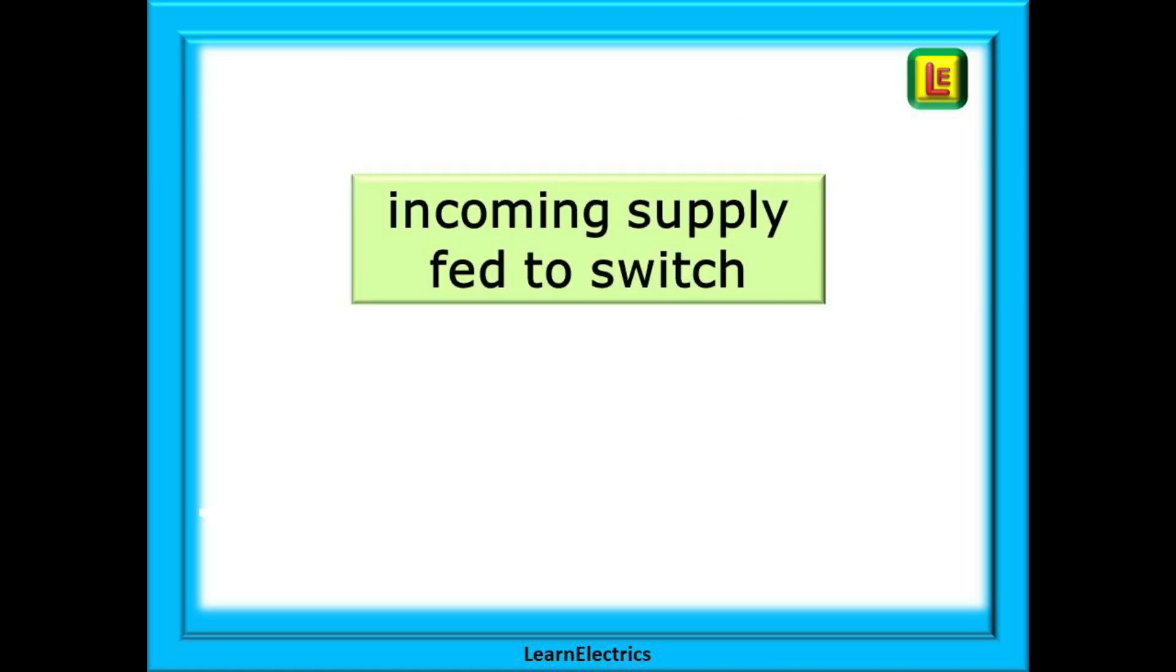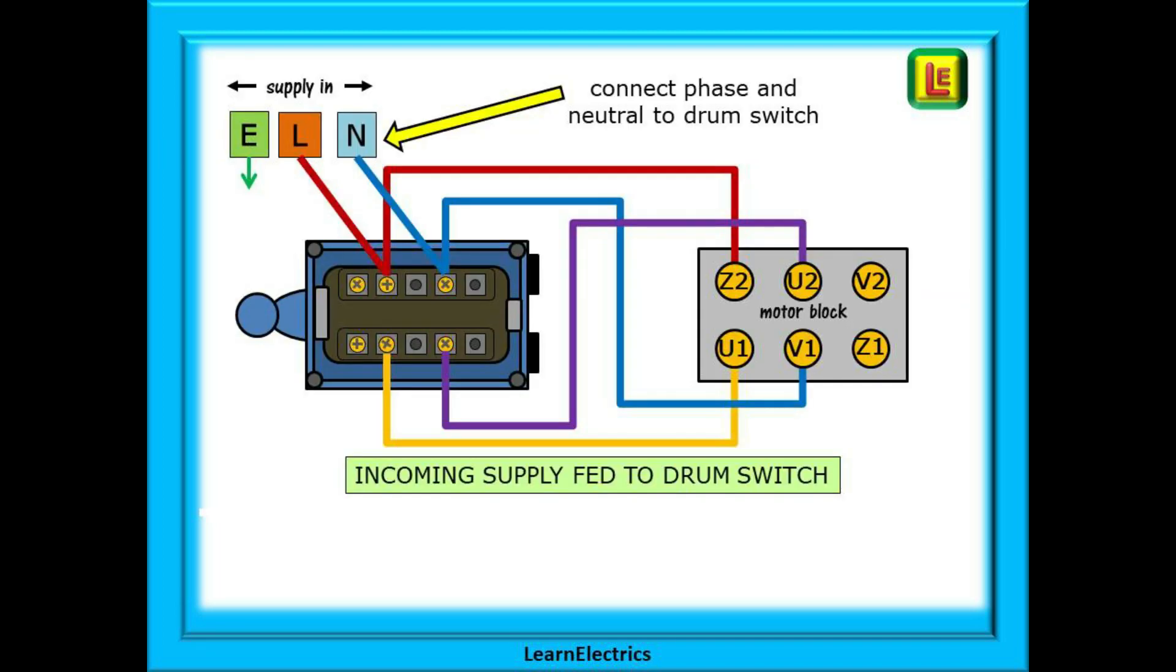We can also consider now two variations that are very easy to do. First how would we wire up the drum switch if the motor and switch were both part of a new installation and we wanted to take the incoming supply straight to the switch and not the motor. Now we will connect the incoming phase to contact number three of the switch in our example and the incoming neutral to contact number seven of the switch. Don't forget to take the earth to the switch and to the motor.